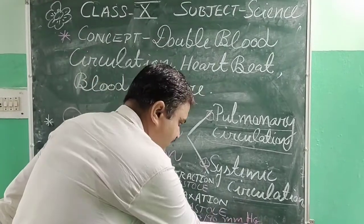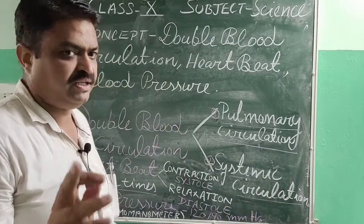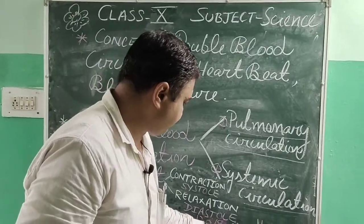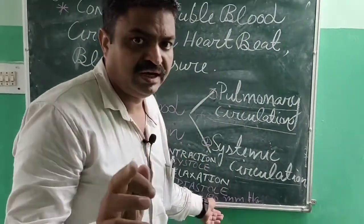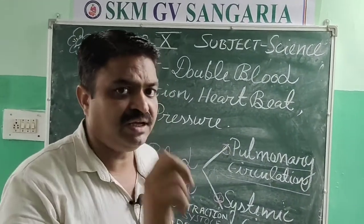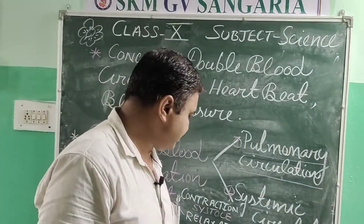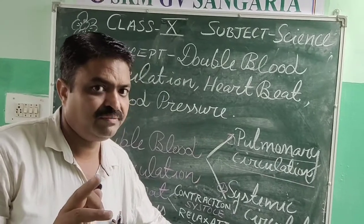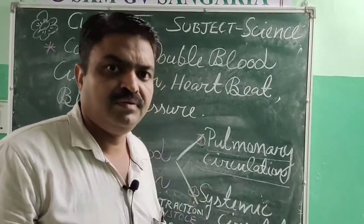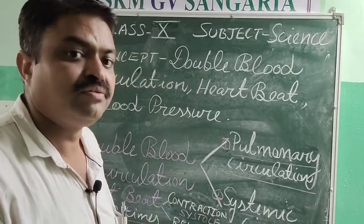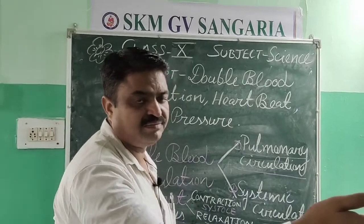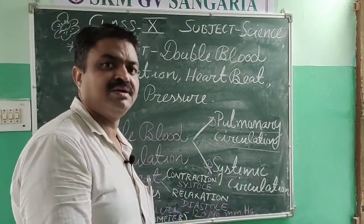If a person has blood pressure higher than 120/90, it is known as high blood pressure, and that disease is known as hypertension. These are the diseases related to blood pressure: hypertension, where blood pressure is high, and hypotension, where blood pressure is low.